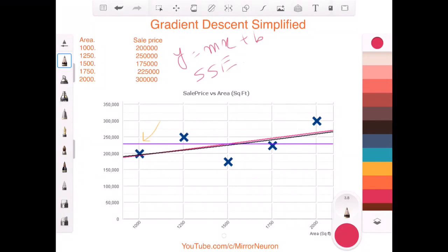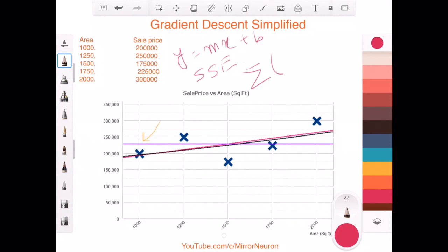The function is the summation of: I subtract the actual price minus the predicted price, whatever prediction I made. Predictions will be based on these straight lines here. I take the square of that, do the sum, take the square root, and I get a value for the sum of squared error. Then I change m and b again.